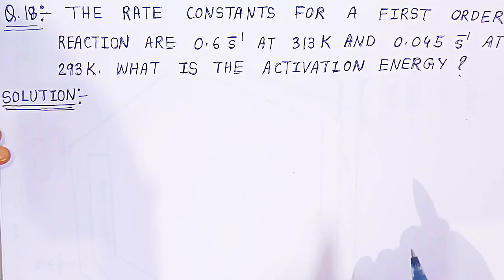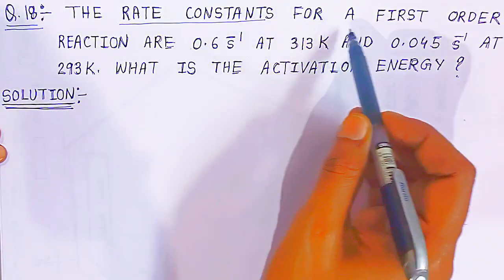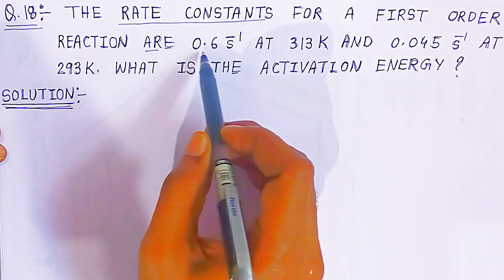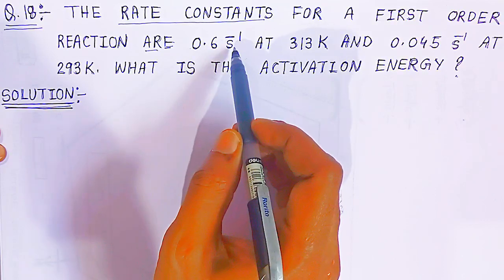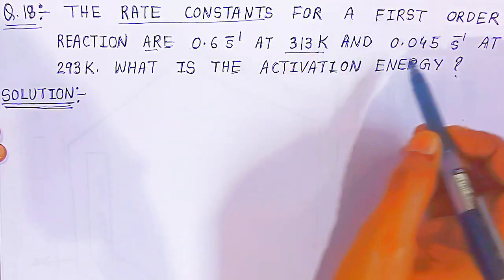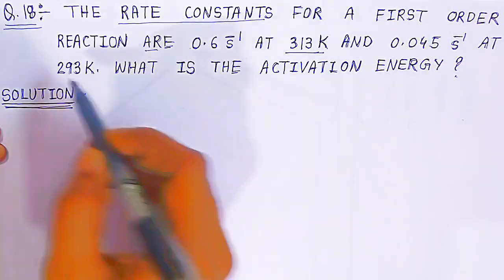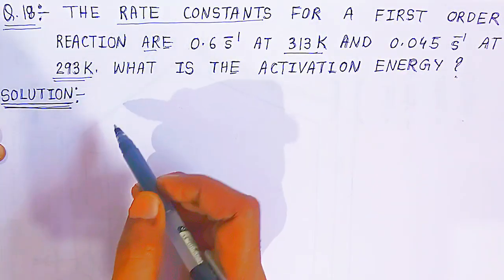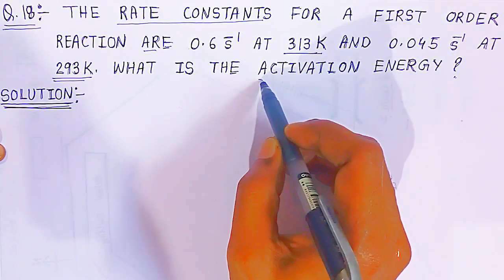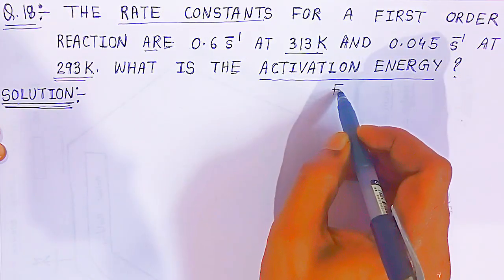In question 18, the rate constants for a first order reaction are 0.6 second inverse at 313 kelvin and 0.045 second inverse at 293 kelvin. What is the activation energy? The question is asking for activation energy, shown with symbol E subscript A.